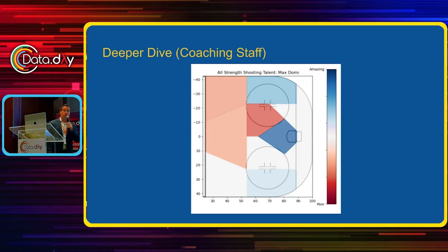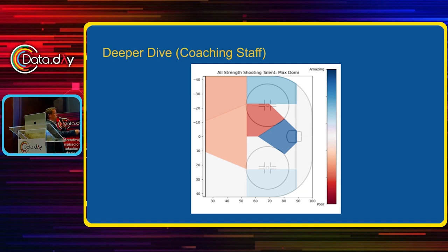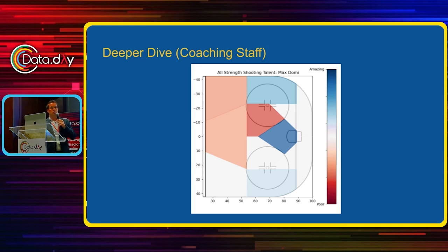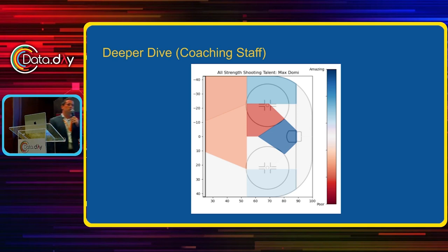Then we go into a deeper dive for the coaching staff using a shooter-tail hunt model: if we're going to use this player, how should we use them? Where are they going to be good? This player is particularly good in the inner slot — the home plate area right in front of the net — quite a bit better than average there. They're worse than you'd expect from the outer slot, but better than average shooting from the outside. So despite being a center, they shoot fairly well from the wings. You might discourage them from shooting from the outside — but these are things we give the coaching staff to work with.